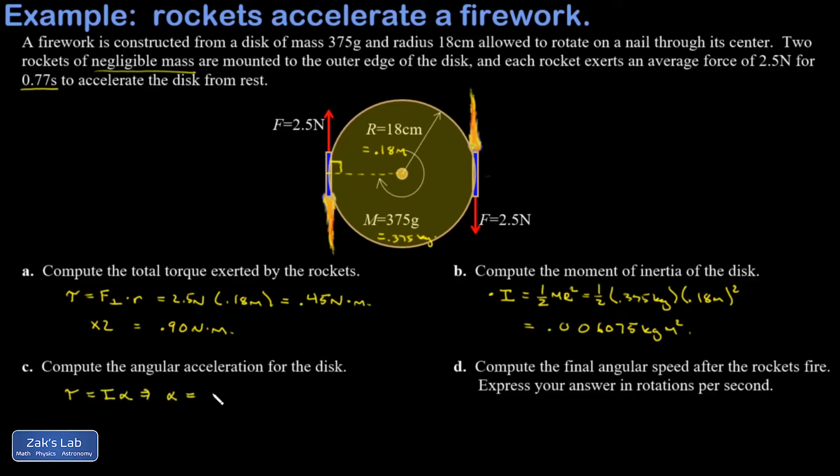In other words, alpha is tau, the torque, divided by the moment of inertia, the resistance to angular acceleration. I get 0.90 newton meters divided by 0.006075 kilogram meters squared, and I end up with an angular acceleration of 148.1 radians per second squared.